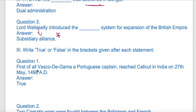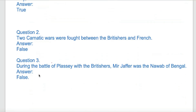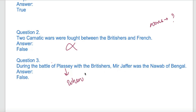True or false: First, Vasco da Gama, the Portuguese captain, reached Calicut in India on 27 May 1498 AD — True. Two Carnatic Wars were fought between the British and the French — check the comments section for the answer. During the Battle of Plassey, Mir Jafar was the Nawab of Bengal — this is False.